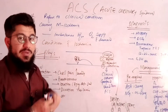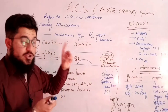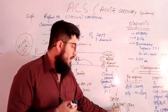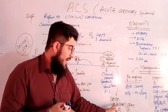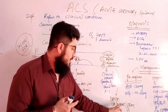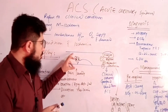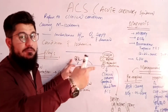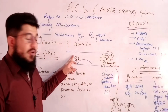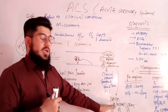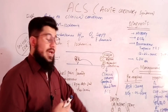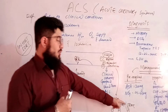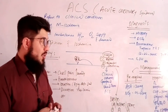This occlusion can be partial or complete. Based on the type of occlusion, we will get different conditions. If the occlusion is partial, it will result in either unstable angina or NSTEMI — non-ST elevated myocardial infarction. If the occlusion is complete, then we will have STEMI — ST elevated myocardial infarction.